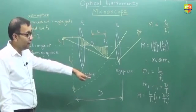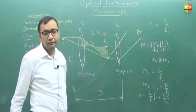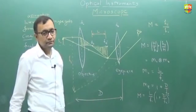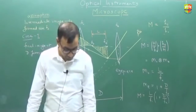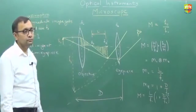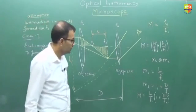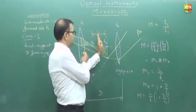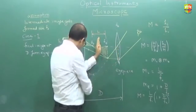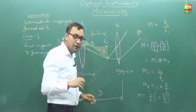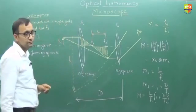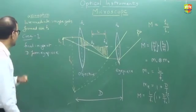For example, if L by FO is 25 and one plus D by FE is 30, it becomes 25 into 30. So the individual magnifications are multiplied. This is case number one.